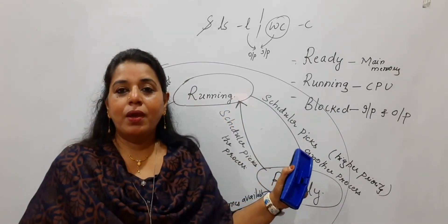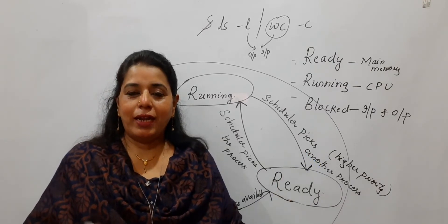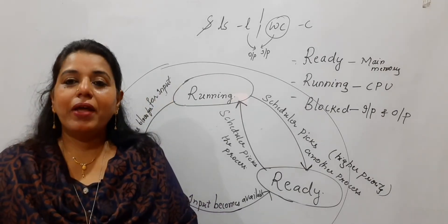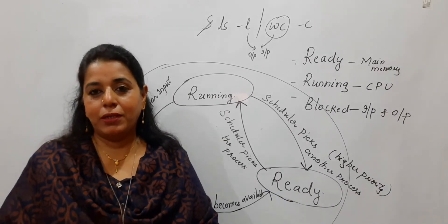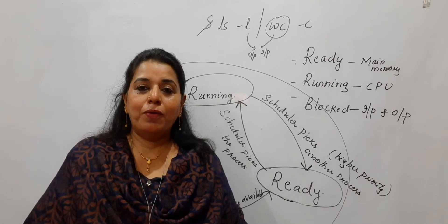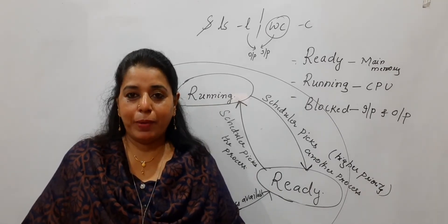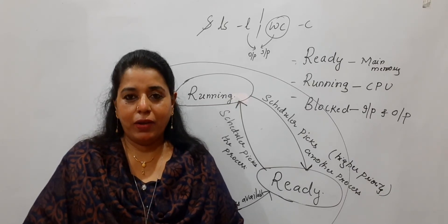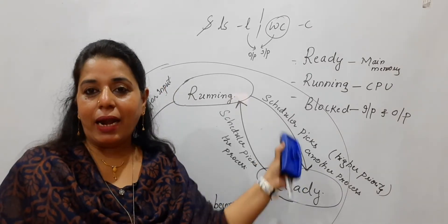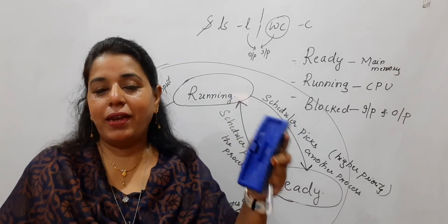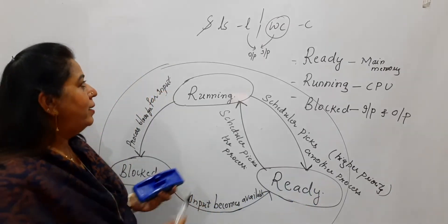Regarding higher priority — when should a process be given higher priority? I will give you an analogy when I teach the priority scheduling algorithm, as it will be more appropriate there. This is all about the state diagram. Please add the process state attribute to the previous session's list of process attributes.